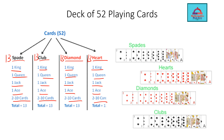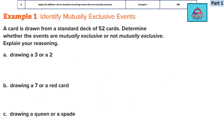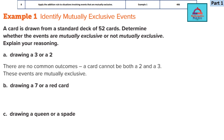Looking at part A — drawing a three or a two. These two cards don't have anything in common. A card cannot have both the number 2 and the number 3 at the same time — it's not possible. Since they don't have any common outcomes and cannot happen together, they are mutually exclusive. That is the answer for part A.